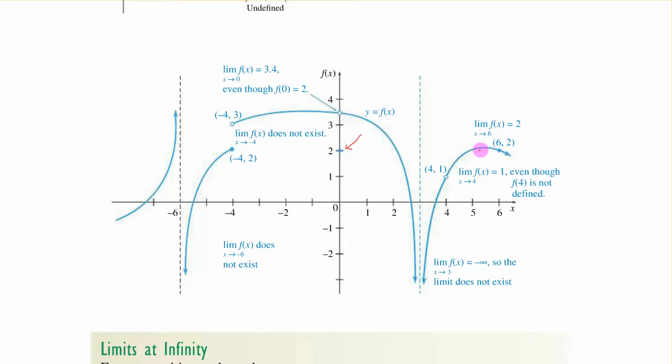Now on this one the limit of f of x as x approaches 3. Well from the left we're going all the way down from the right we're going all the way down. So it's negative infinity and says so the limit does not exist. But typically we go ahead and write the limit is negative infinity. Here the limit of f of x as x approaches 4. Well we're coming into 4. We hit here. We hit here the y value is 1. It's not defined there but that can be the limit. The limit as x approaches 6. Okay from the left or the right we end up at a y value of 2.